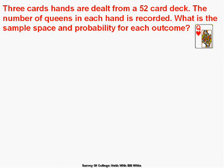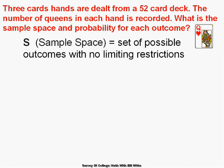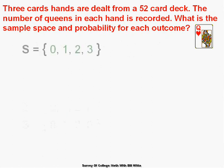Three-card hands are dealt from a 52-card deck. The number of queens in each hand is recorded. What is the sample space and the probability of each outcome? The sample space is the set of all possible outcomes with no restrictions. We dealt three cards and we're counting the queens. The possible outcomes are: no queens, one queen, two queens, or three queens.